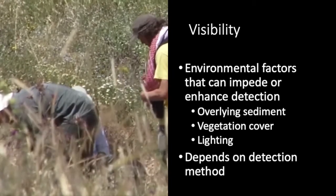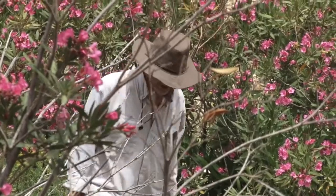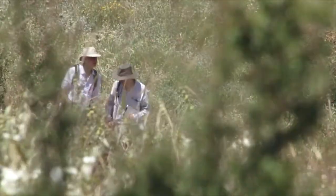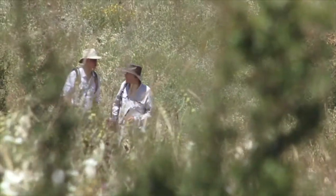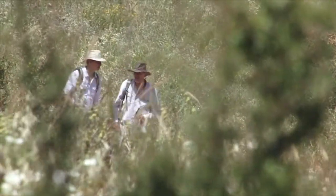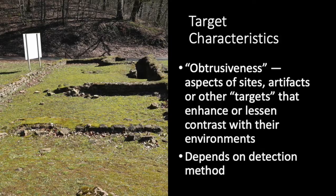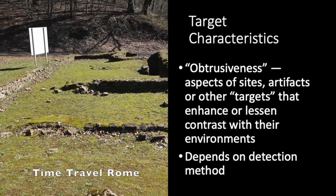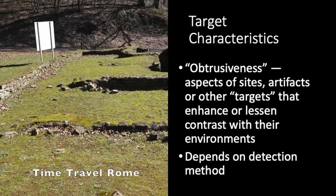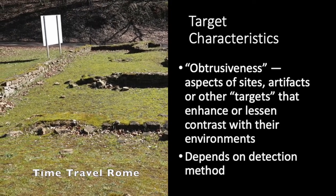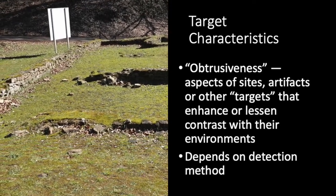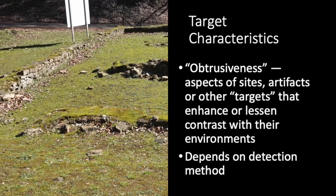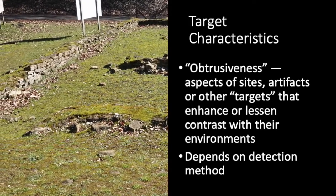However, for some methods, such as ground penetrating radar, sediment and vegetation are effectively transparent. By obtrusiveness, archaeologists refer to the characteristics of the targets themselves, or more properly, how those targets contrast with their environments.